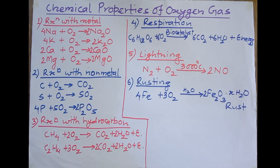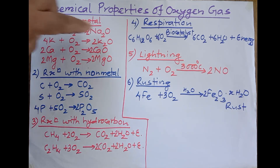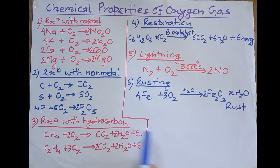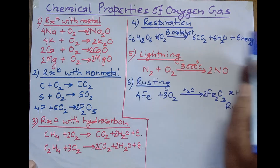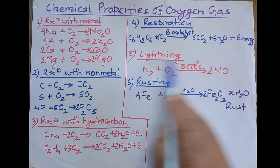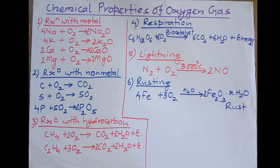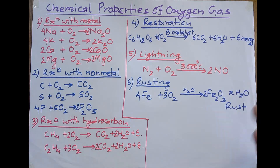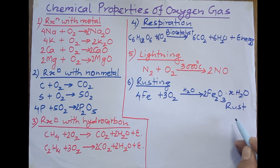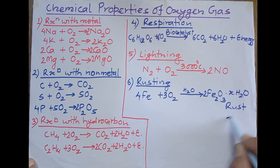These are the important chemical properties of oxygen gas. You can remember them under these headings: reaction with metals, reaction with non-metals, reaction with hydrocarbons, respiration, lightning, and rusting. Besides these, there are other properties also, but these are the most important. That's all for today.